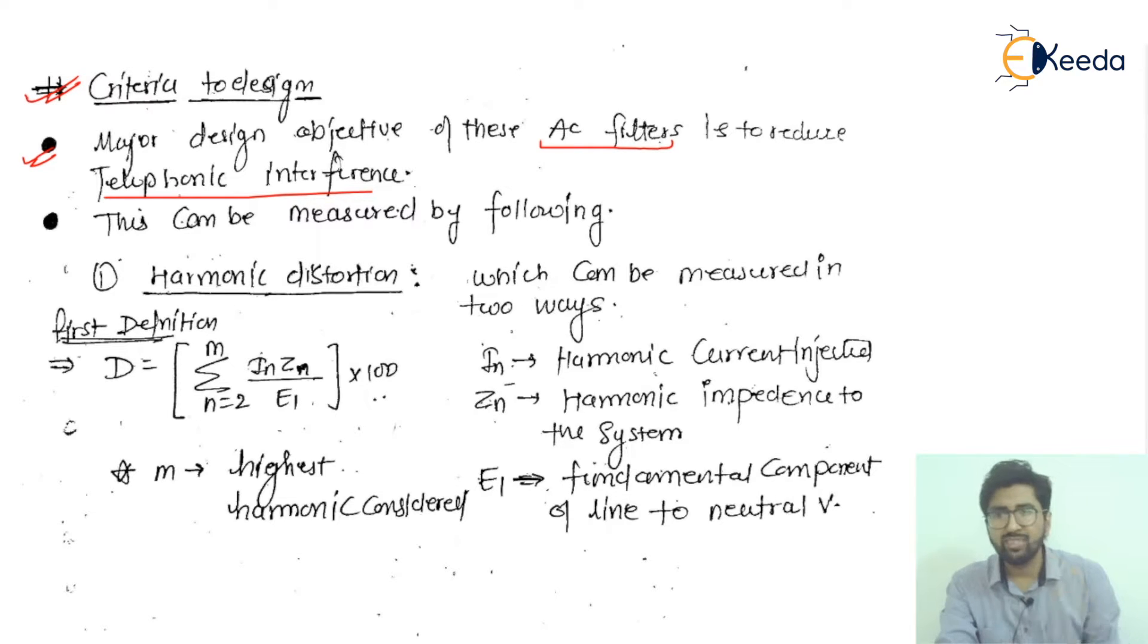First is harmonic distortion. Harmonics cause distortion of the waveforms given to your system source. Harmonic distortion can be defined in two ways. The first is represented by D, which equals sigma from n=2 to M of (In × Zn / E1) × 100. In is the harmonic current injected to any equipment or filter.